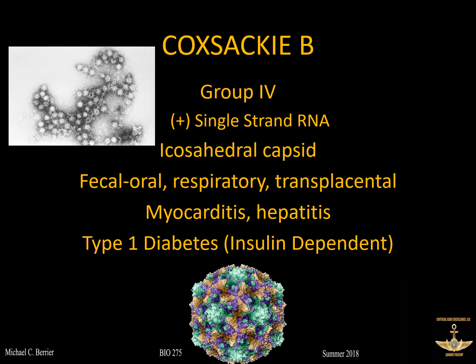There's a family of Coxsackie B viruses, 1 through 6. B1 through B4 are talked about the most. It is a Group 4 virus, which means it is positive-sense single-strand RNA, so it can readily replicate without having to be translated like a negative-sense virus would. It has an icosahedral capsid, meaning 20 equal sides on the protein coat on the outside.